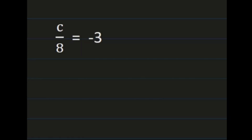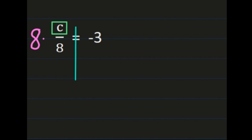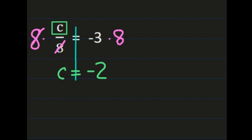For our final example, let's look at a problem with division. We have c over 8, or c divided by 8, equals negative 3. We want to isolate c — box it and add the line through the equal sign. We have c divided by 8, so the inverse is to multiply. We multiply both sides by 8. On the left, the 8s simplify out, leaving just c. On the right, negative 3 times positive 8: a negative times a positive is a negative, and 3 times 8 is 24. So c equals negative 24.